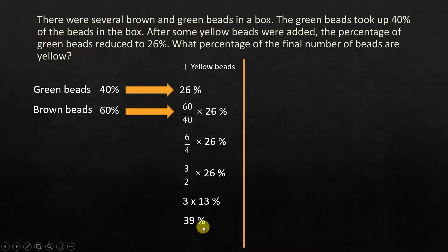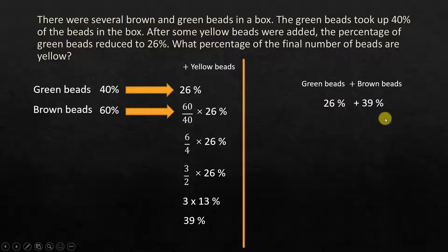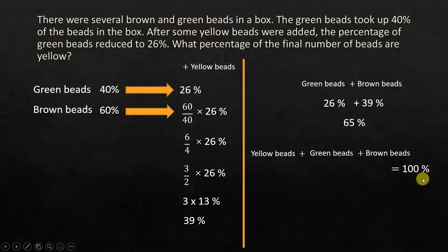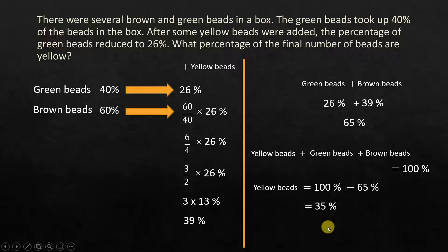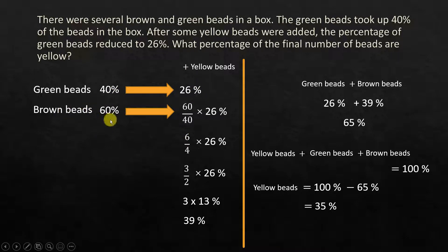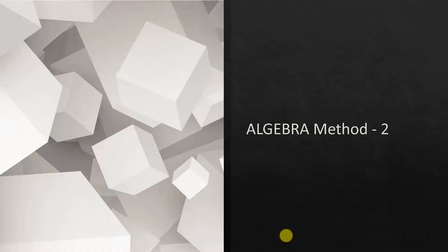So now brown beads is 39%, green beads is 26%. Green beads plus brown beads is equal to 26 plus 39, which is 65%. All three together give 100%, so yellow beads will be 100% minus 65%, which becomes 35%. This is a very quick method to solve these kinds of problems, because we know the relation of how 40% becomes 26%, and then we use the same thing for 60% to solve.